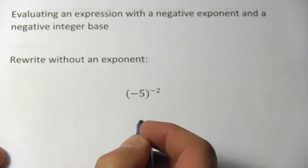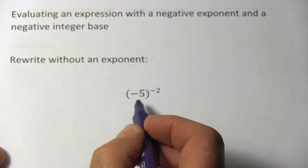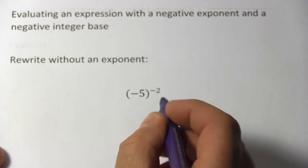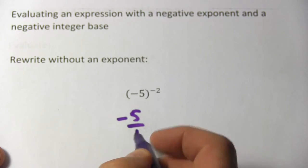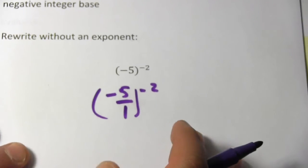However, we can rewrite it as 1. Any integer is itself over 1 as a fraction, so I'm going to rewrite negative 5 as negative 5 over 1, and this is to the negative 2 power.